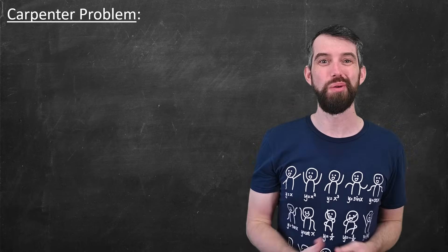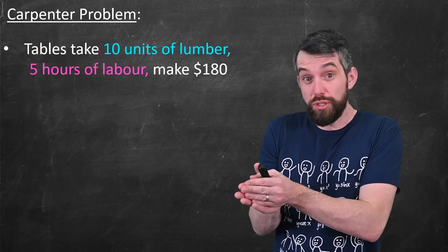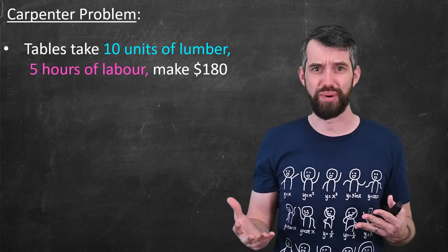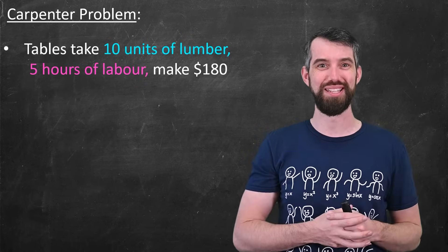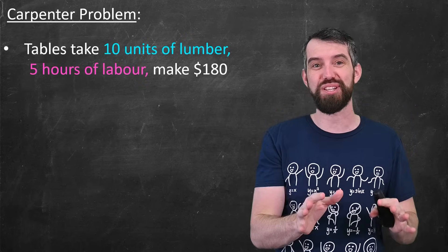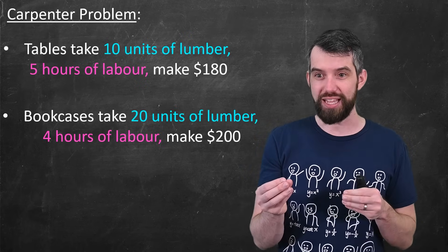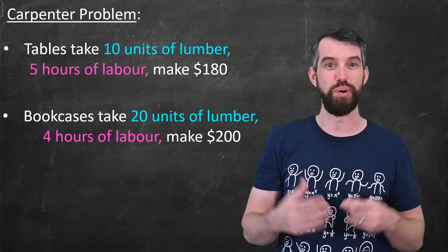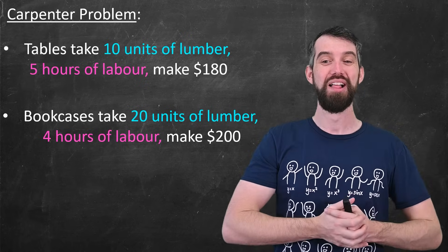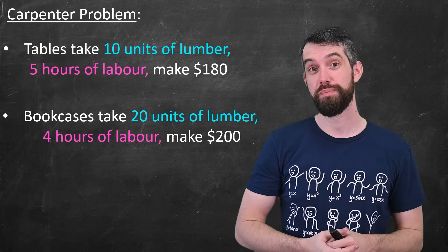To give an idea of where this type of problem would come up, I'm going to share something called the carpenter problem. A carpenter can make tables or bookshelves. If they make a table, it takes 10 units of lumber and 5 hours of labor, and they make $180 profit. Alternatively, if they make a bookcase, it takes 20 units of lumber but only 4 hours of labor — bookcases are perhaps easier to put together — and they make $200 profit.